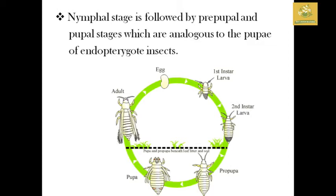Regarding the life cycle of Thysanoptera, the nymphal stage is followed by a pre-pupal and pupal stage, which is analogous to the pupa of endopterygote insects. The first stage is the egg, followed by the first and second instar nymphs, then the pro-pupa and pupa stages. They live beneath leaf litter or in the soil, after which the adult emerges from the pupa and a new cycle begins. The order is subdivided into two suborders.